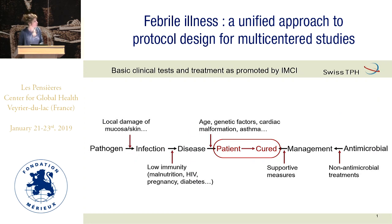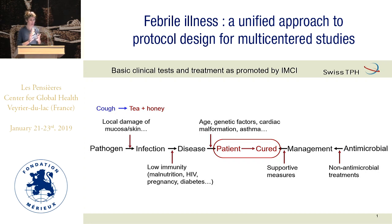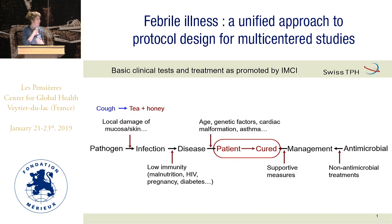Coming back to the different factors that matter for patient cure — an example about local damage. In IMCI, there are very basic clinical tests and treatments that are promoted, which make the world of difference, probably much more than adding an antibiotic. For all children with cough, just giving them tea and honey soothes the mucosa and may help avoid a bacterial pneumonia.